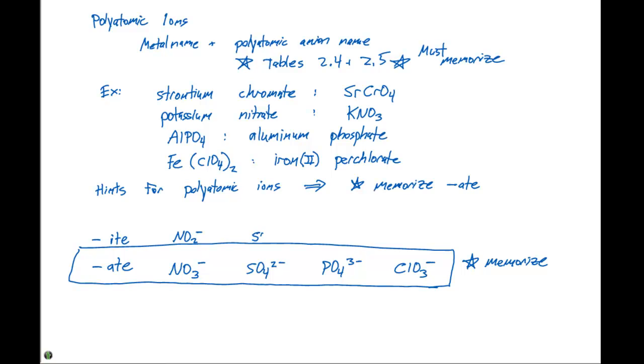Sulfite is gonna be SO3, 2 minus. Phosphite is gonna be PO3, 3 minus. And chlorite is gonna be ClO2 minus. So when you go from an -ate to an -ite, you keep the same charge, you just remove one oxygen.